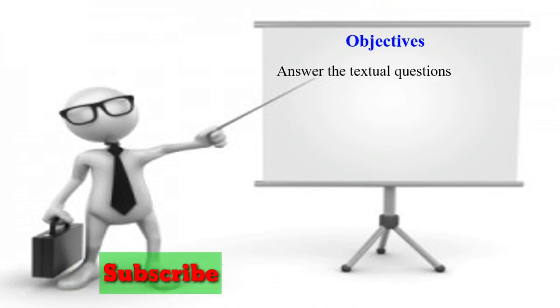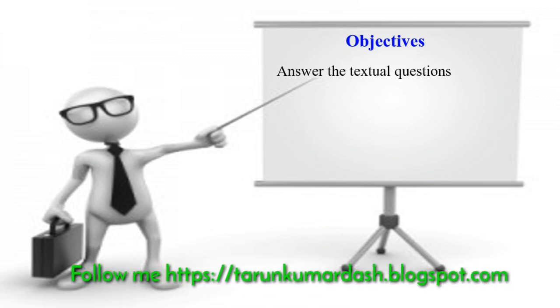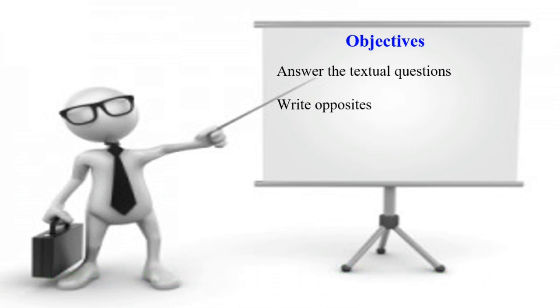The objectives we are going to achieve after watching this video lesson are: number one, answer the textual questions related to the textbook and the story. Next, we are going to write the opposite words by adding some prefixes. Next, we are also going to write the procedures of various events, and we are going to write down some of the connectors used in sentences. So let's start.